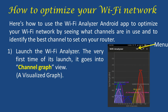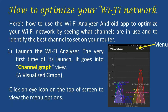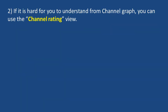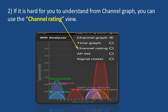Launch the Wi-Fi Analyzer. The very first time of its launch it goes into channel graph view, which is a visualized graph. Click on the eye icon on the top of the screen to view the menu options. If it is hard for you to understand from the channel graph, you can use the channel rating view.